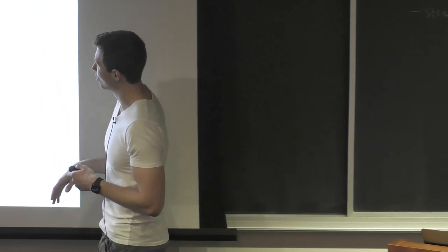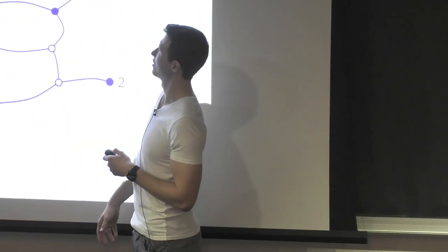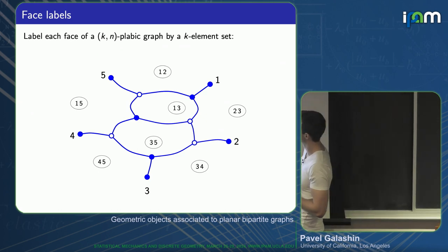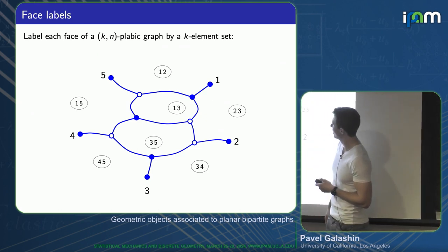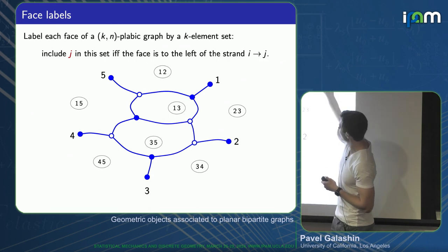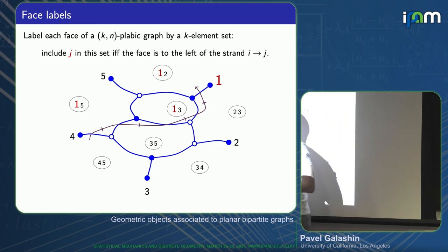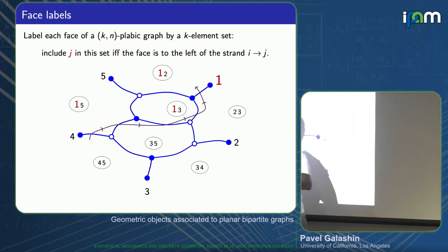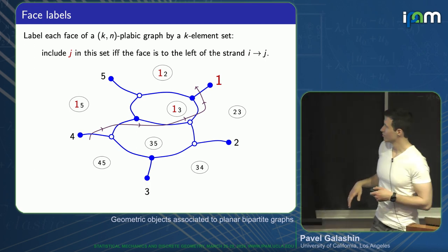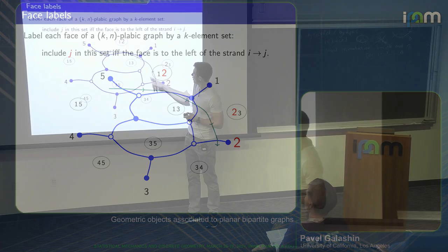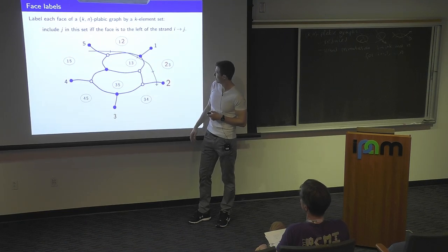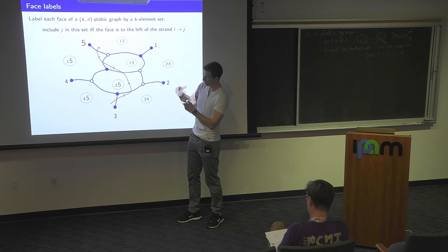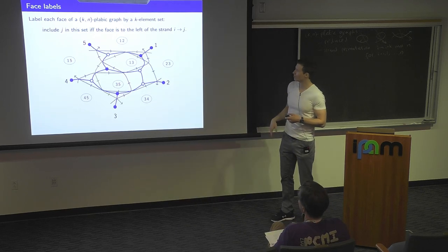Let me define another important thing associated to a plebik graph: face labels. I'm going to label every face of a reduced plebik graph by a K-element set. The way it works is using the strands — for any strand, say the one terminating at one, it divides the disk into two parts, and I add one to the sets which are to the left of the strand. Because every edge belongs to two strands in the opposite direction, all sets have the same size, which is K.